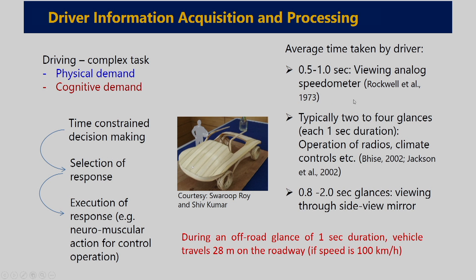If you look at the various scenarios where the driver has to take a decision within a fraction of a second, 0.5 to 1 second is required for viewing an analog speedometer. Typically 2 to 4 glances are required, each of 1 second duration, while operating different types of controls like radio buttons or climate control — AC control. For viewing a side view mirror, left or right side, it takes 0.8 to 2 seconds.